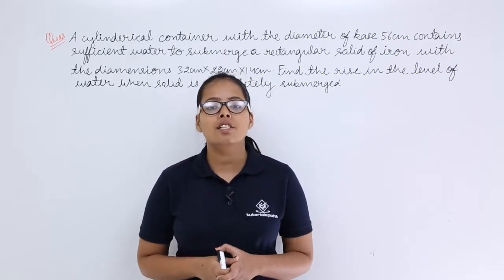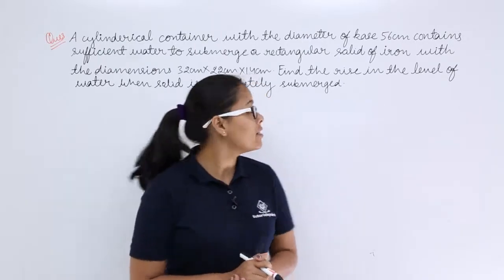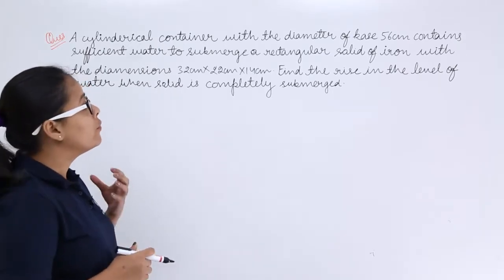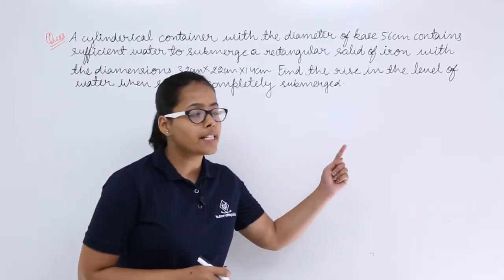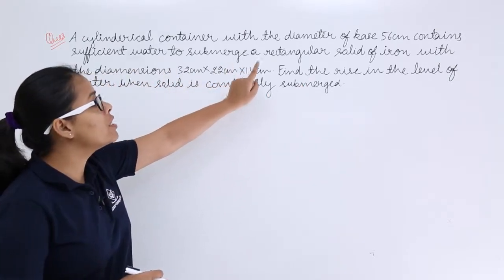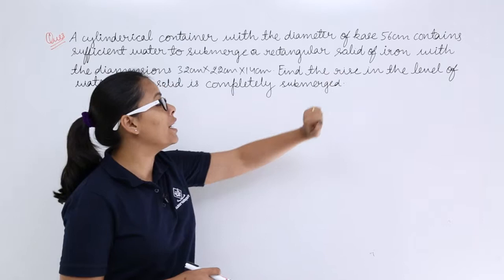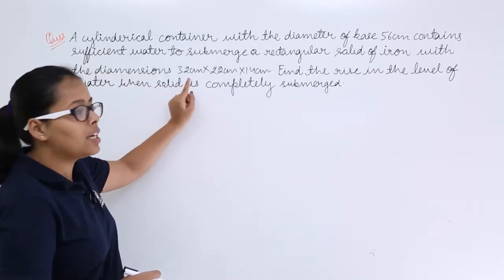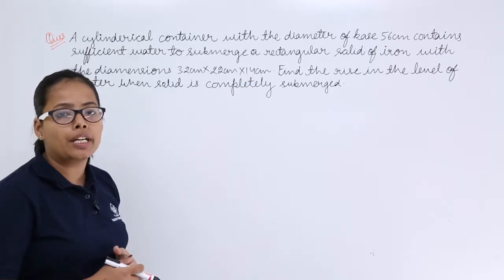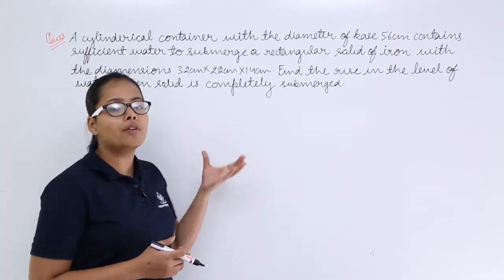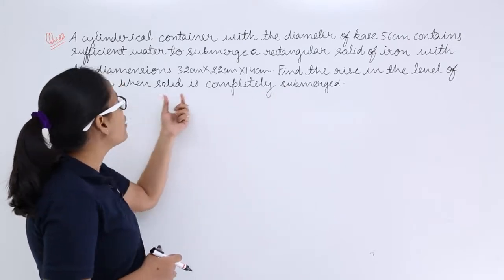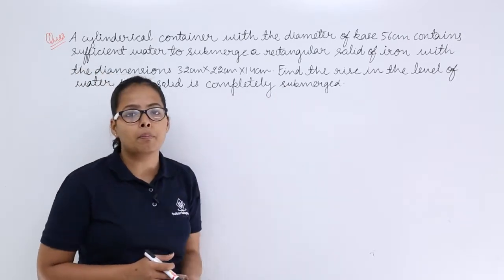Let's discuss this problem. A cylindrical container with a diameter of base 56 centimeters contains sufficient water to submerge a rectangular solid of iron with the dimensions 32 centimeters, 22 centimeters, and 42 centimeters — which means this is a cuboid with these dimensions. Find the rise in the level of water when the solid is completely submerged.